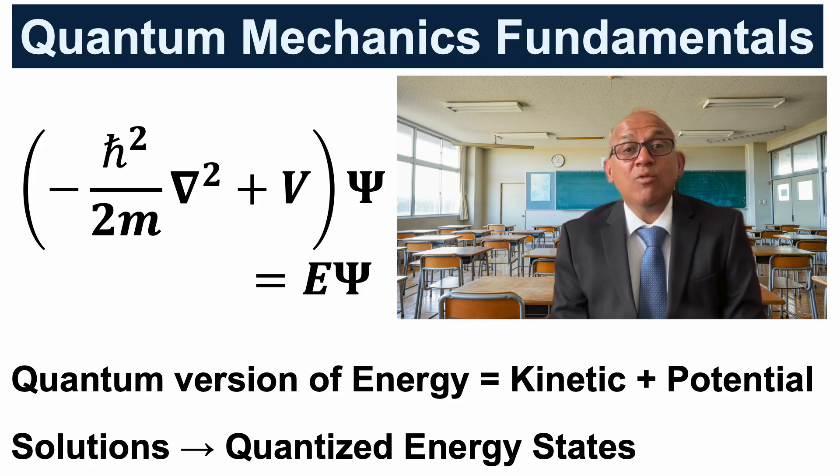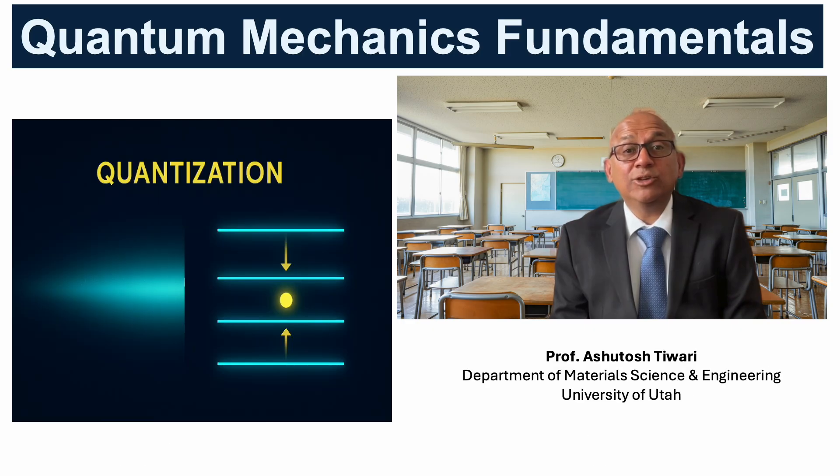That is why quantum mechanics does not give us a smooth continuum of energies—it gives quantized energy levels. In other words, atoms, molecules, and nanostructures have discrete energy levels instead of a smooth spectrum.